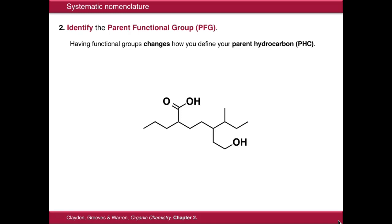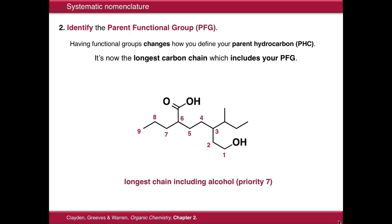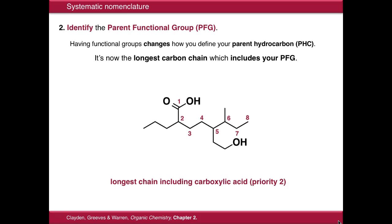Having a functional group in your molecule changes how you define your parent hydrocarbon. Before it was the longest carbon chain you could find; now it's the longest carbon chain which includes your parent functional group. So the longest hydrocarbon chain in this molecule is 10 carbons long, but we have two functional groups: an alcohol and a carboxylic acid. Since the carboxylic acid is higher priority than the alcohol, even though the chain is only eight carbons long, that's the one which includes our parent functional group — the carboxylic acid. Therefore our parent hydrocarbon is octane.